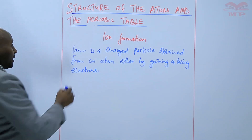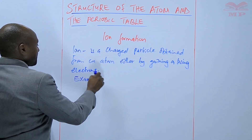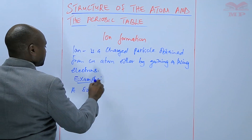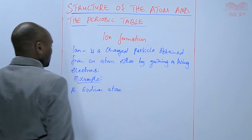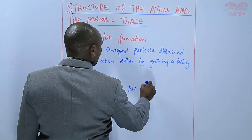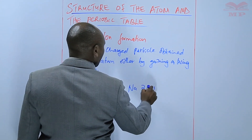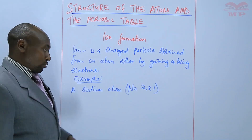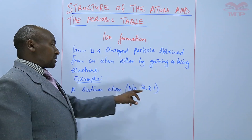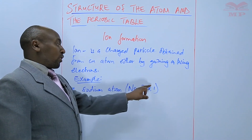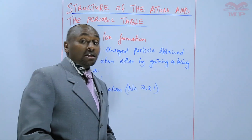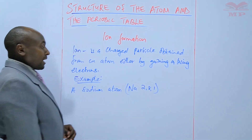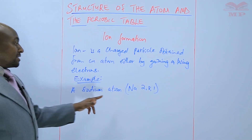For example, if you take a sodium atom — that is Na 2,8,1, that is the electron arrangement — we can say that that atom is unstable. It's unstable because not all the energy levels are fully occupied by electrons.